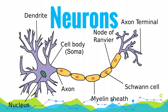Now we're going to talk about one of the most important cells in the body — from a psychological standpoint, that's the neuron. There are several different types of neurons: sensory neurons, motor neurons, and interneurons. They all have different functions but work in the same fundamental way. A neuron has a few important parts: the dendrite, the nucleus, the axon, and the axon terminal.